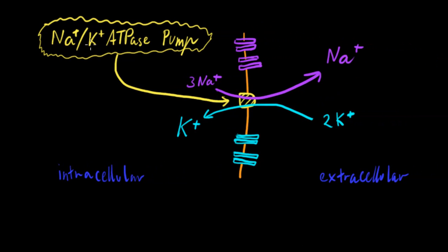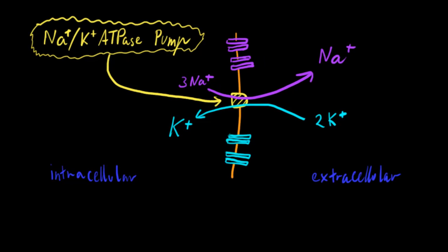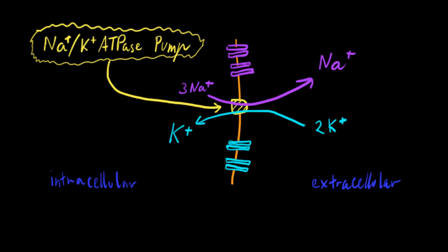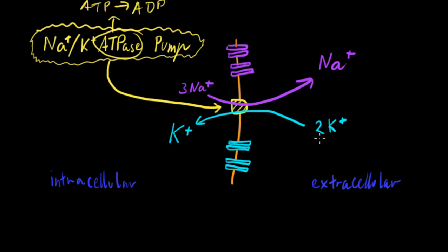We'll also introduce the sodium-potassium ATPase pump, which is quite involved in setting the resting membrane potential in a neuron. This pump is ATPase, meaning it takes ATP and converts it to ADP — it uses energy. In this particular instance, it pumps sodium outside the cell and potassium inside. Because it's pumping three sodium out and two potassium in, it creates a slight positive on the outside and a very slight negative on the inside. This is called an electrogenic contribution because of the nature of the pump.